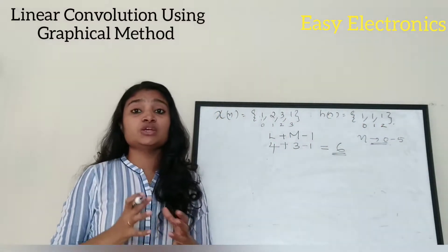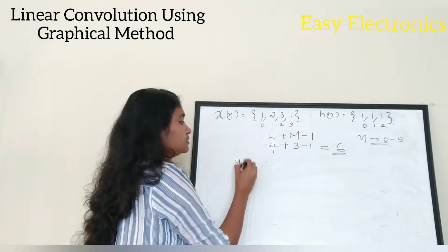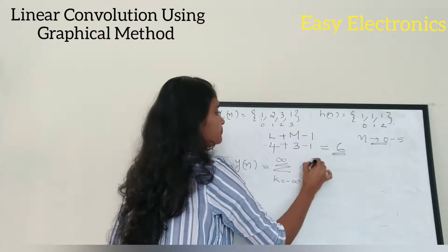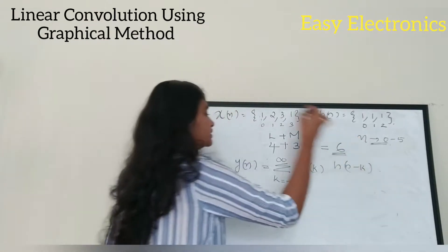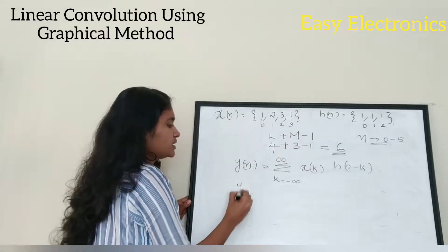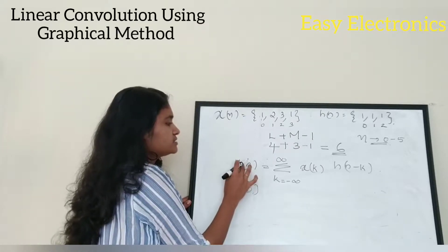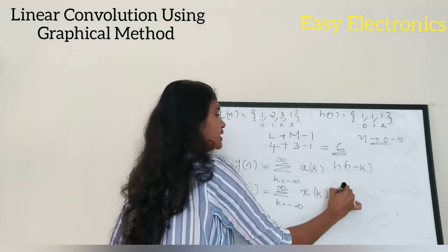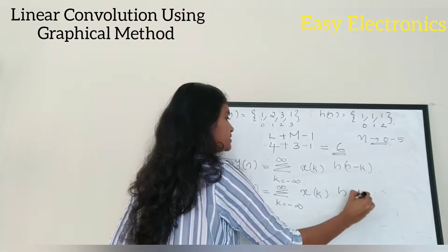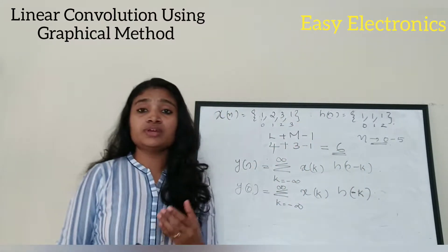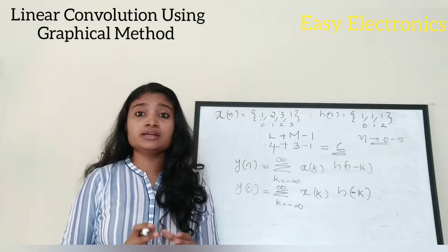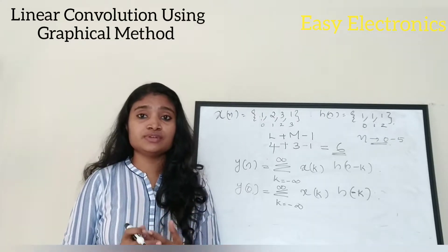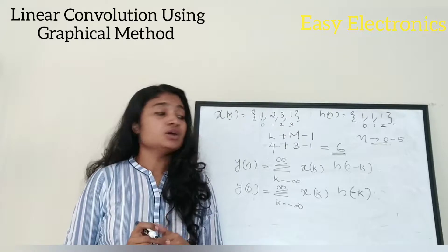Now let's write the general equation to find y of n: y of n equal to sigma k equal to minus infinity to infinity of x of k into h of n minus k, where n varies from 0 to 5. We are going to do this using graphical method. I have already uploaded a video on how to find linear convolution using circular convolution — please check that video; I will share the link in the description box.